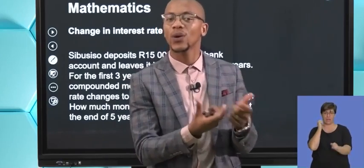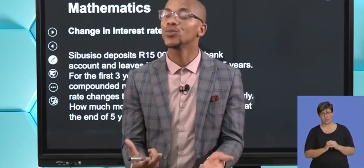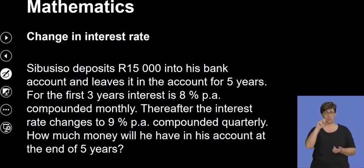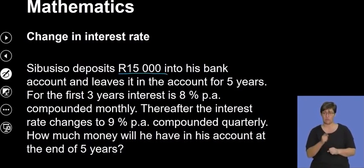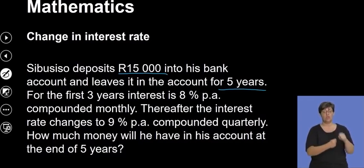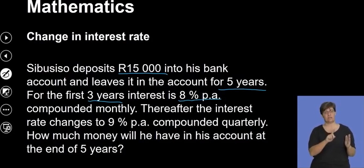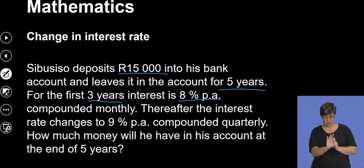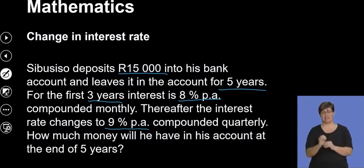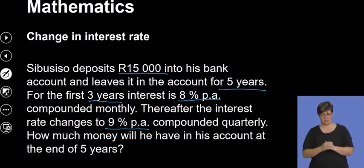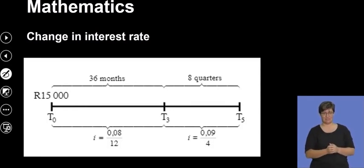Here's a question: Sbuseso deposits R15 000 into his bank account and leaves it there for five years. For the first three years, the interest is eight percent per annum compounded monthly. Thereafter, for the remainder of the investment, he gets nine percent per annum compounded quarterly. How much money will Sbuseso have in his account at the end of five years?